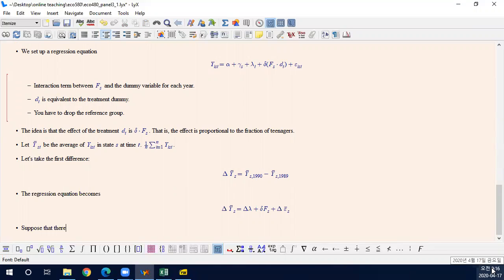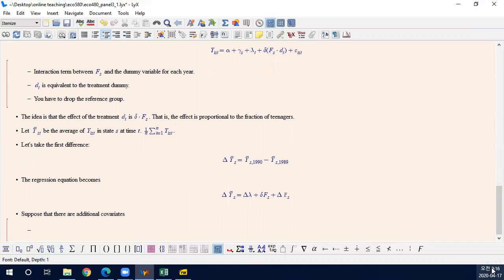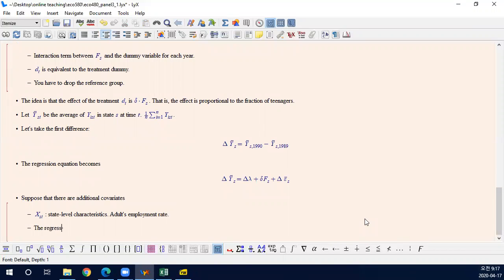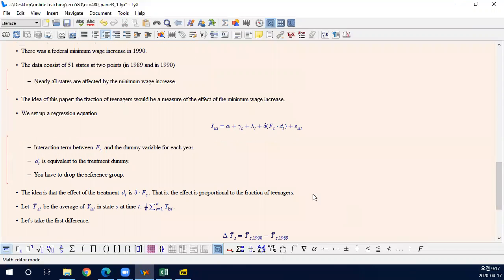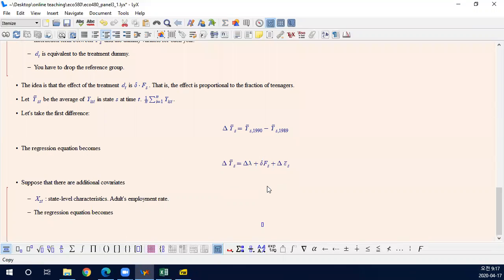Suppose that there are additional covariates. You may consider state-level characteristics. In this example in the textbook, they have adults employment rate. Here they only consider teenagers, but teenagers employment rate may co-move with adults employment rate or adults wages. So here simply they added adults employment rate and then the regression equation becomes here. From here it's easy to add additional variables.